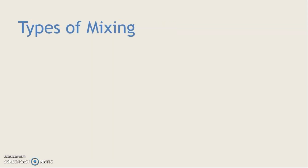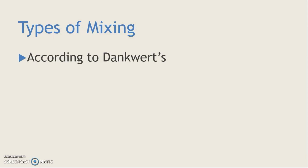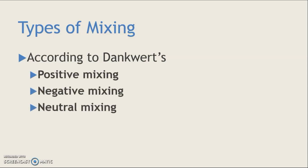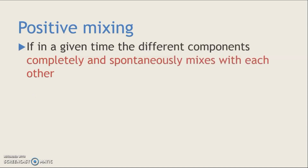According to Peter Dankwart, a chemical engineer from England, mixing is divided into three types: positive mixing, negative mixing, and neutral mixing. In positive mixing, the different components completely and spontaneously mix with each other within a given time. Spontaneously means there is no need for external force to be applied. Without application of external force, if particles mix with one another, this is called positive mixing, and the mixtures obtained are called positive mixtures.